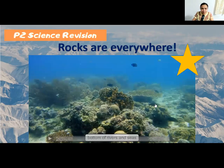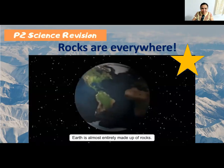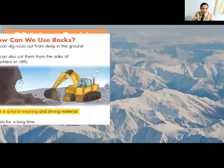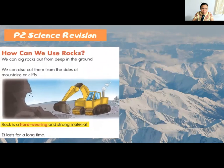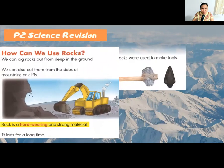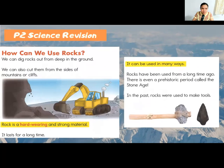How can we use rocks? We can dig rocks out from deep in the ground. We can also cut them from mountains or cliffs. As you can see in the picture, this is a backhoe digging rocks from under the ground.